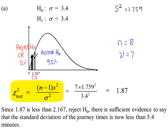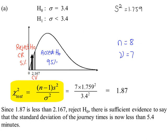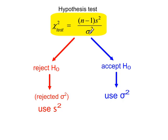Our test value of 1.87 is less than 2.167, so we reject H0. There is sufficient evidence to say that the standard deviation of the journey times is less than 5.4 minutes. Since we've rejected H0, this population variance value has been rejected, which means for any subsequent calculations we're going to use the sample value. The sample variance is 1.759, so its standard deviation will be the square root of that — that's the value to use for any subsequent calculations.